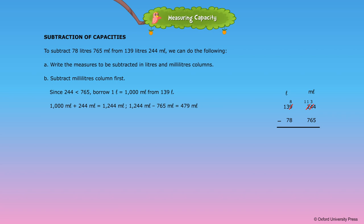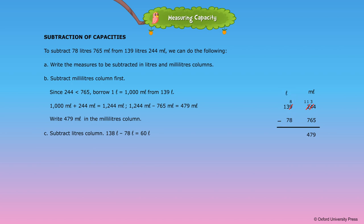1244 milliliters minus 765 milliliters is equal to 479 milliliters. Write 479 milliliters in the milliliters column. C. Subtract the liters column. 138 liters minus 78 liters is equal to 60 liters.